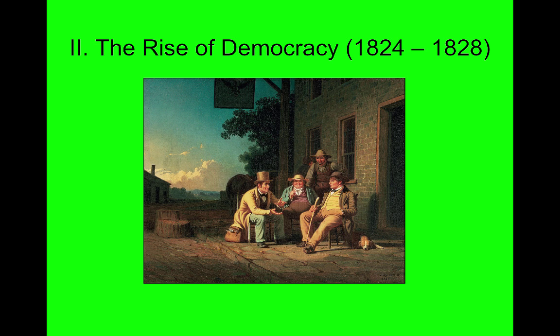Our next set of notes is about the rise of democracy, sometimes called Jacksonian democracy, from 1824 to 1828. The PowerPoint starts by looking at a picture of Americans sitting around doing what was America's favorite pastime in the 1820s: talking about politics.